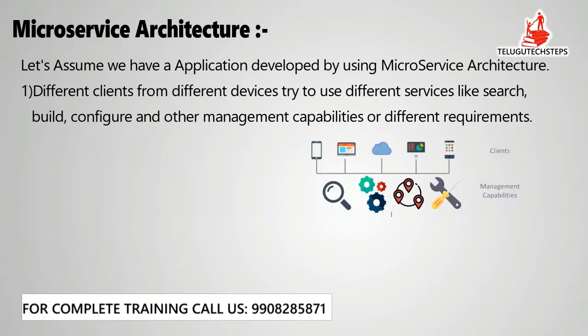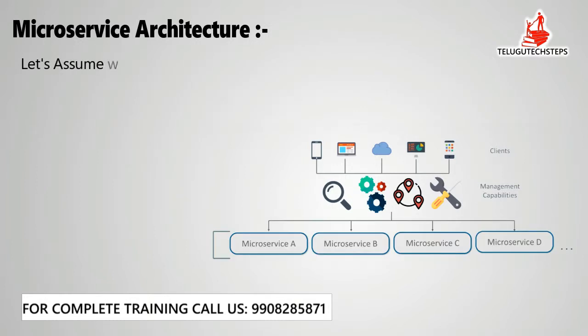The first point is: different clients from different devices try to use different services from the application. They want to use the different services that are available in our application. For example, search operations, build configuration, and other functionalities — whatever we have in our application. The application has different types of management capabilities and functionality.